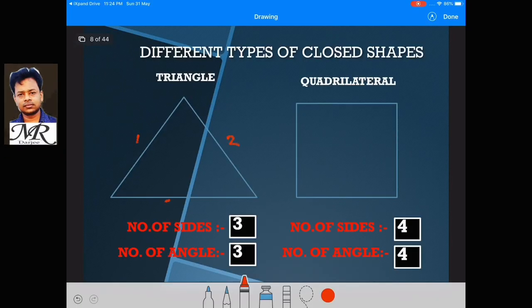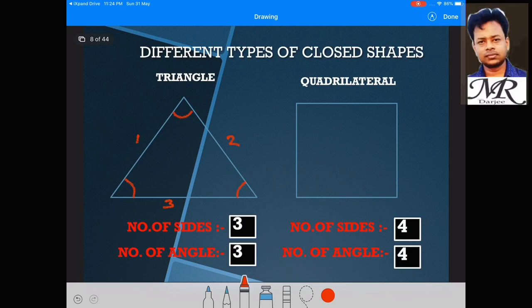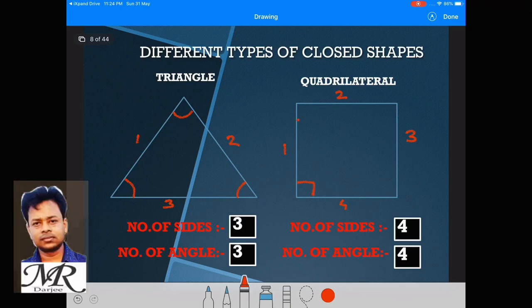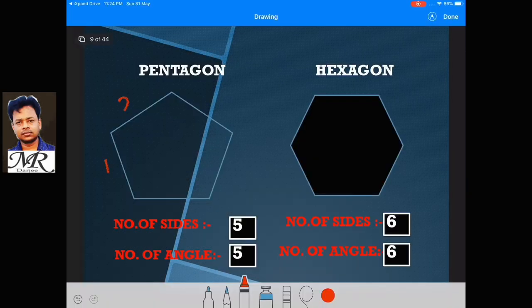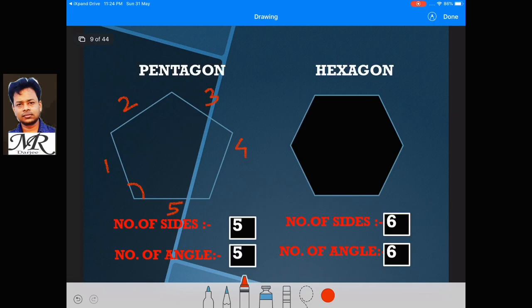Different types of closed shapes. First, Triangle — a shape with 3 sides and 3 angles. A shape with 4 sides and 4 angles is called a Quadrilateral. A shape with 5 sides and 5 angles is called a Pentagon.